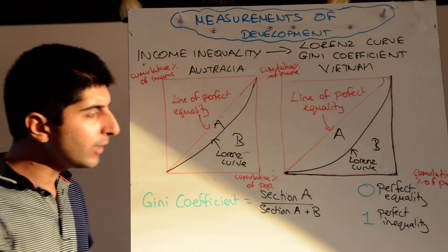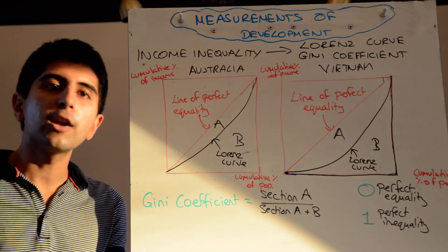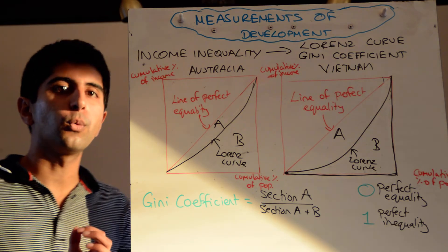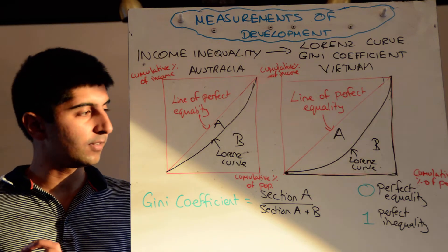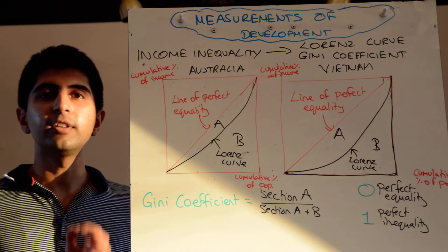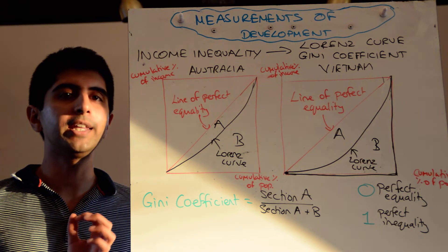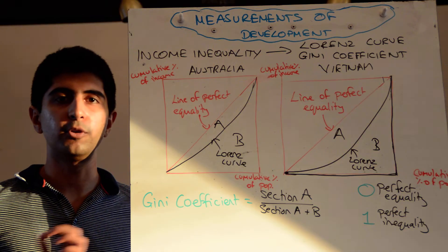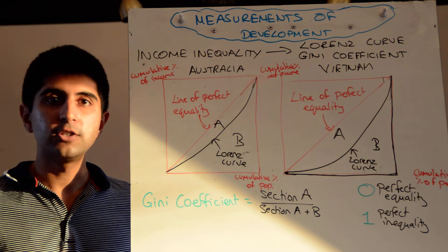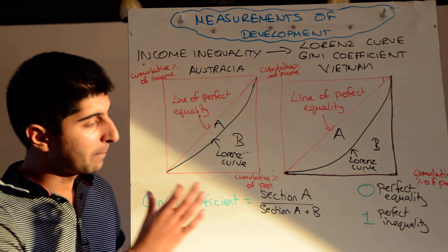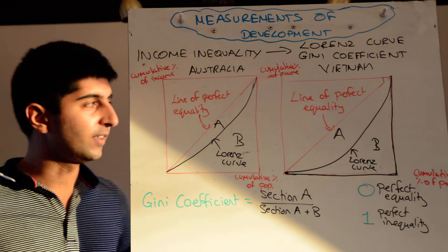Very simply, the way to interpret the Gini coefficient: the closer the figure is towards zero, the more equal the income distribution is. The closer the figure is towards one, the more unequal the income distribution is. That's an important way to manipulate and interpret these figures.